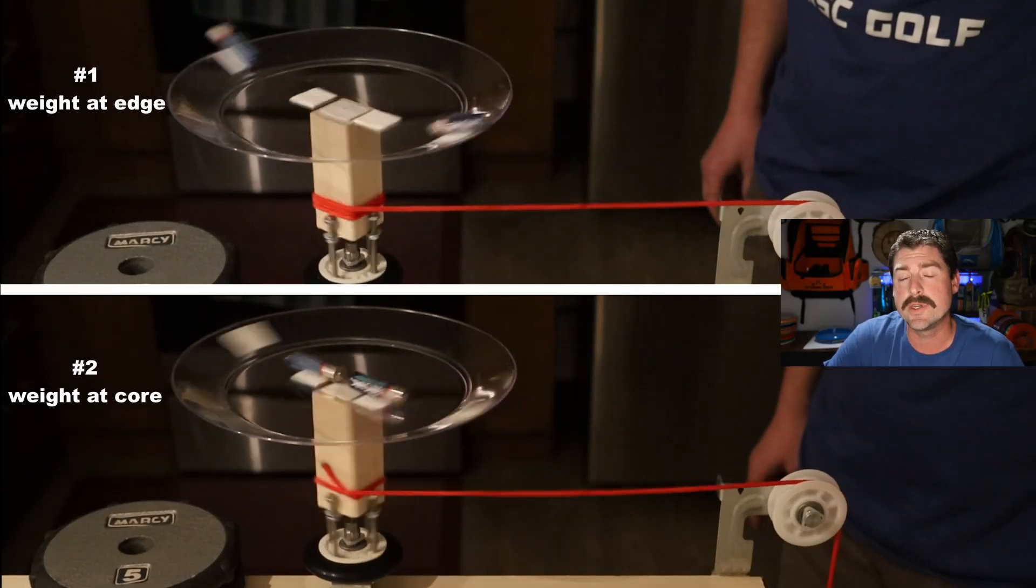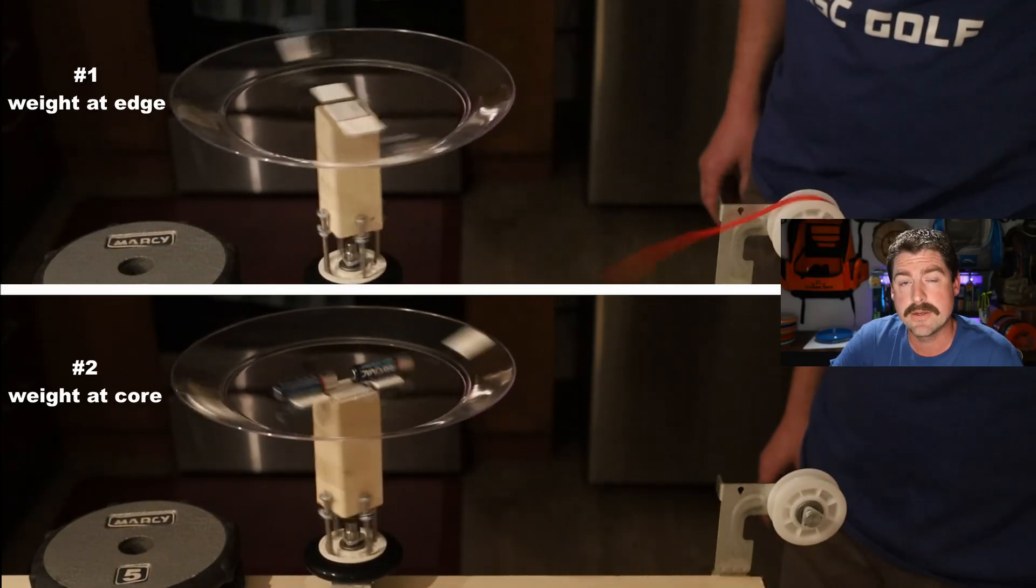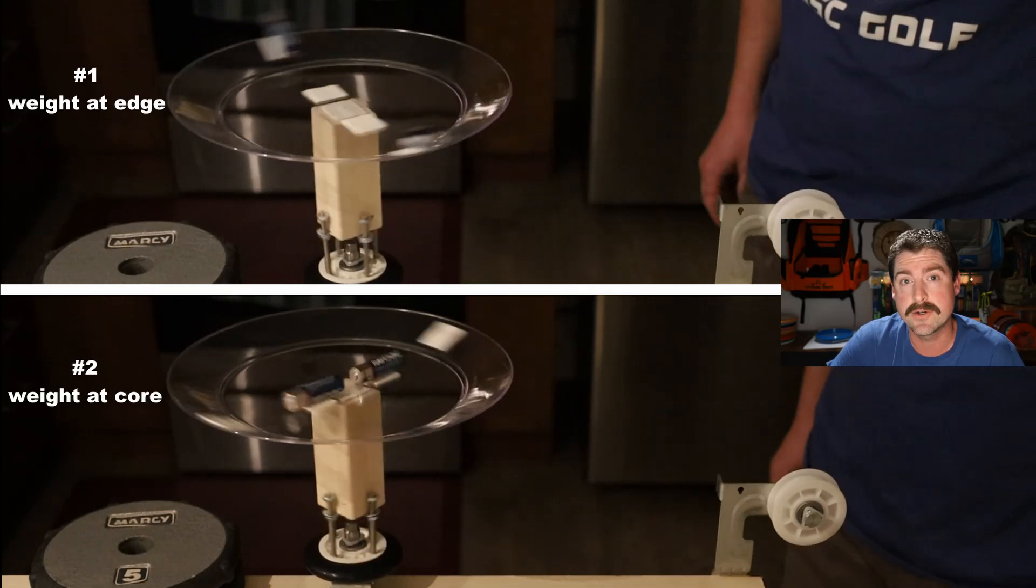So, on the bottom, we get a faster spin, and on top, we have one that spins longer.